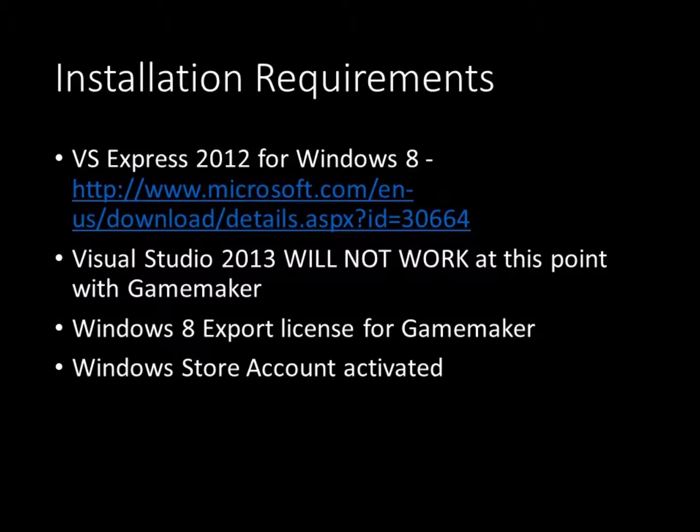So let's talk about requirements. Even if you have Visual Studio 2013 installed, you still have to have Visual Studio 2012 installed. GameMaker specifically requires it, as I found out via my experiments, if you're doing Windows 8 WinJS output. It's a good idea just to install it anyway. The best route if you don't really want to install the full Visual Studio 2012 is to go get VS Express 2012 for Windows 8 and drop that in. You'll also obviously have to have the Windows 8 export license for GameMaker — right now this is a Pro version available for $99, pretty good deal given the productivity of GameMaker. And you have to have your Windows Store account activated.